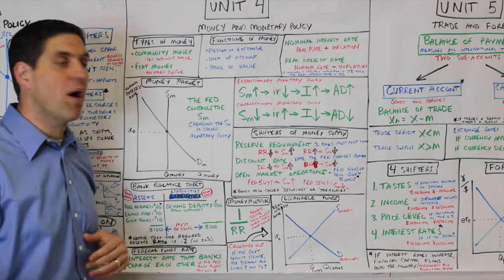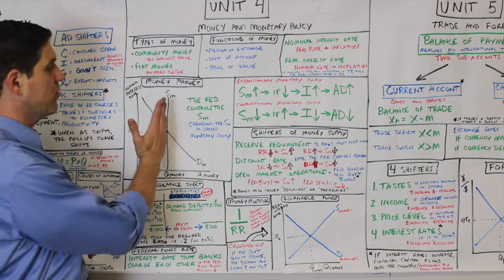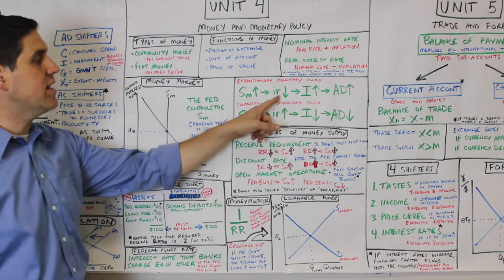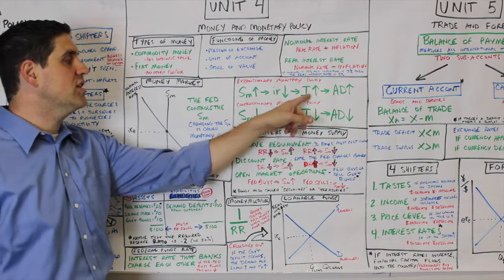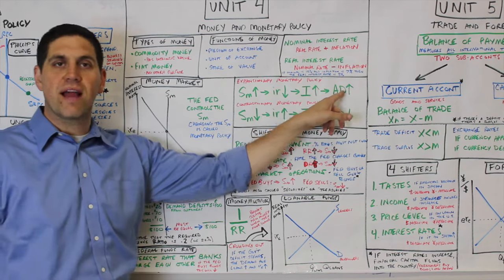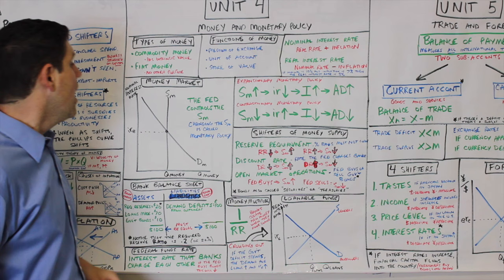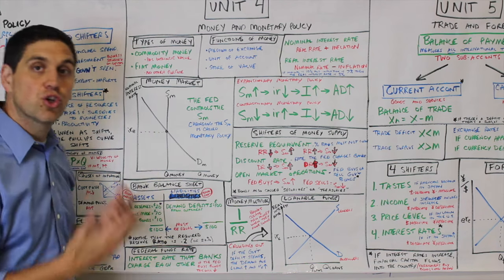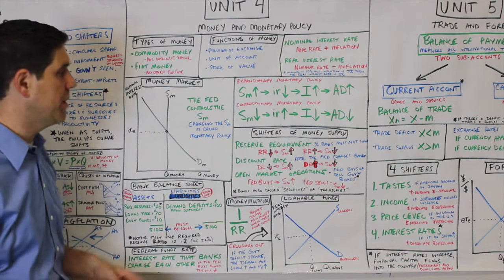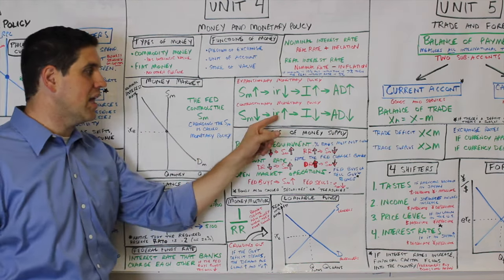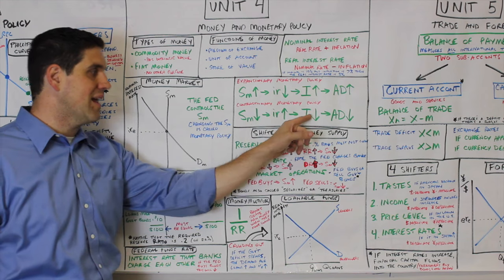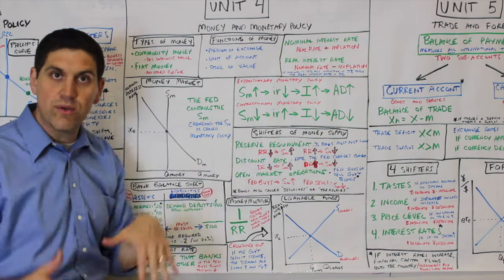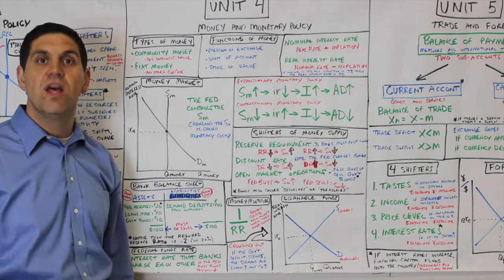Expansionary monetary policy is when the Fed increases money supply. This will decrease interest rates, increase investment, increase aggregate demand, speeding up the economy. Decreasing money supply is called contractionary monetary policy — this would increase interest rates, decrease investment, and therefore slow down the economy and decrease aggregate demand.